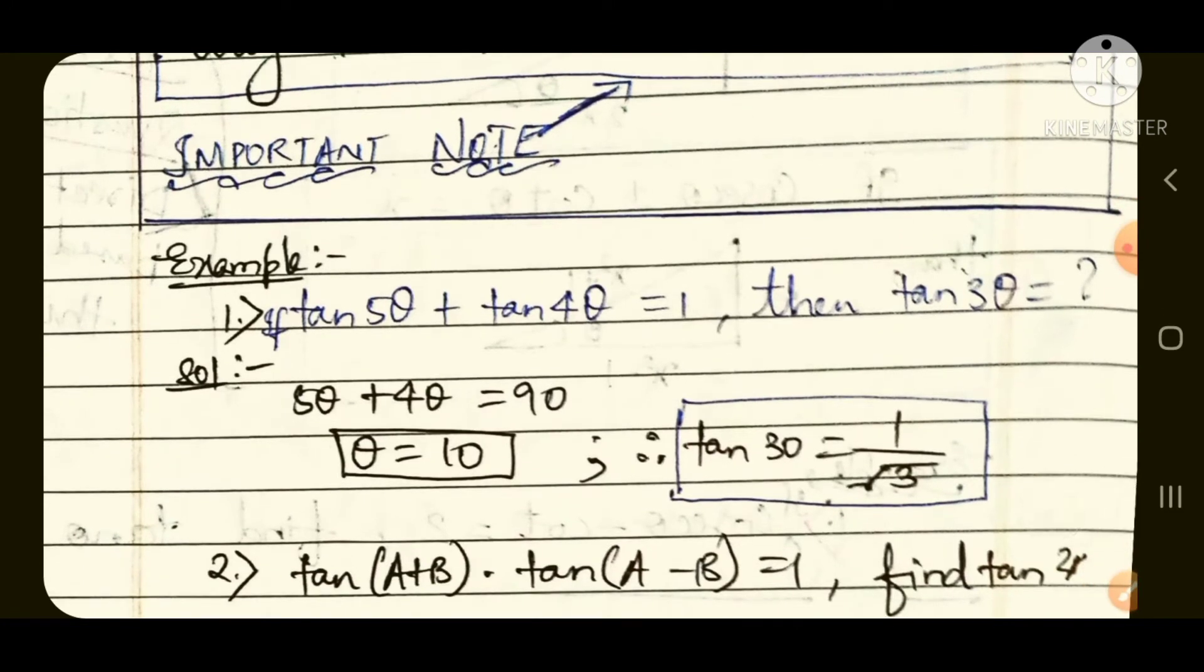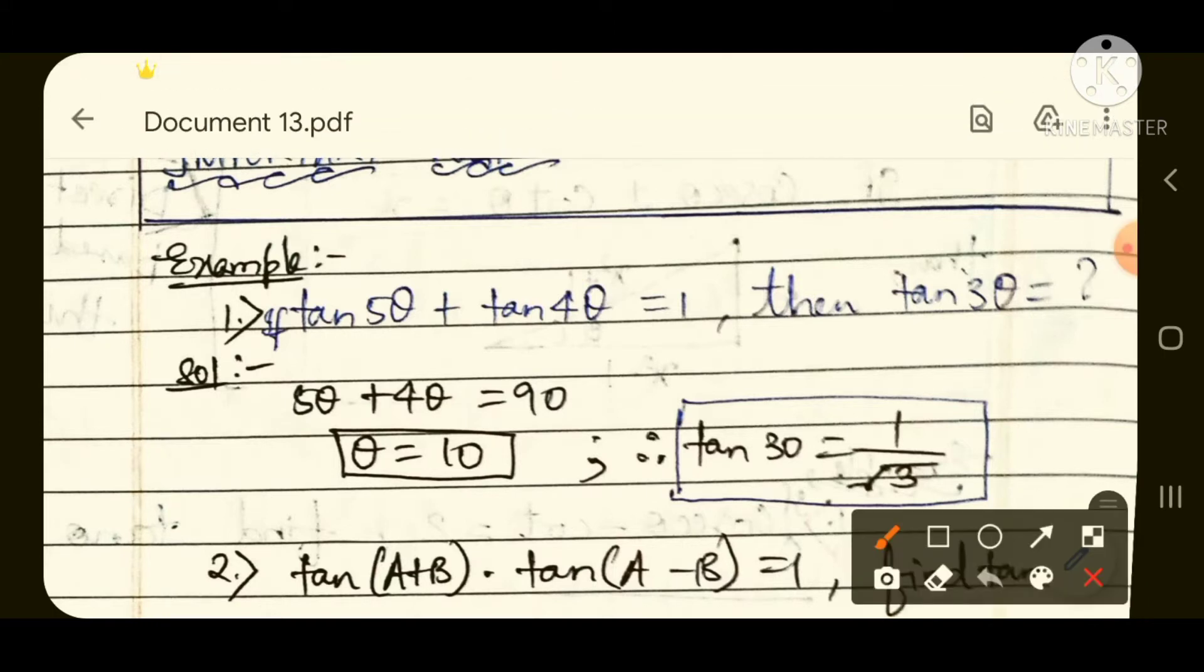For example, if tan theta 1 times tan theta 2 is given as 1, then if they ask you to find the sum of both angles theta 1 plus theta 2, then the answer is simply 90. And the same thing is with cot also.